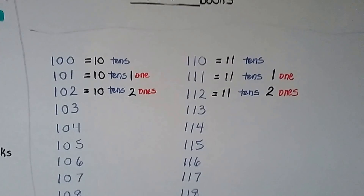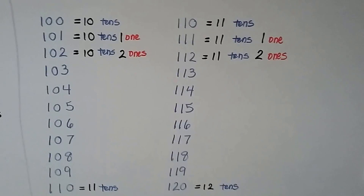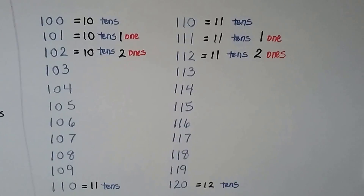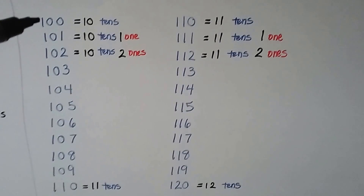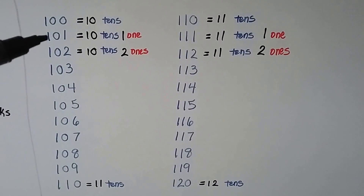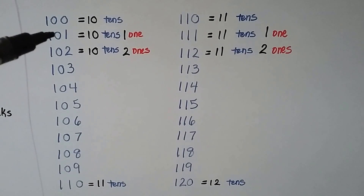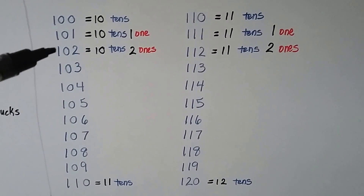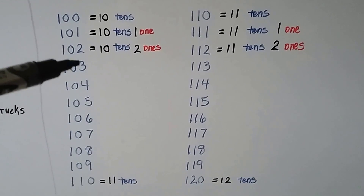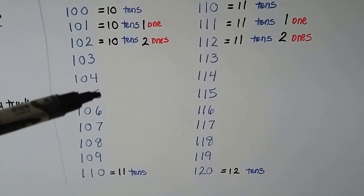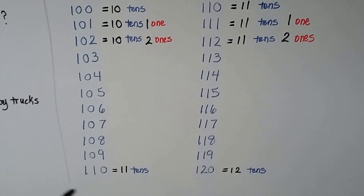So in the last video, we learned about the numbers from 100 to 110. We know that 10 tens is equal to 100, and 101 is 10 tens and 1 more. And 102 is 10 tens and 2 more, 2 ones. And as we count down, we can see the ones are going up by one number: 3, 4, 5, 6, 7, 8, 9. When we get to 110, that's equal to 11 tens.